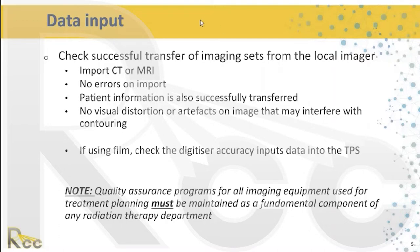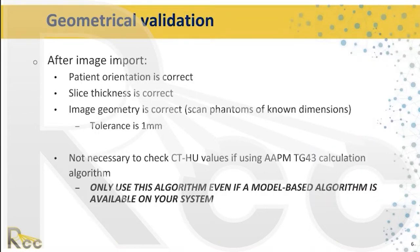QA programs for all imaging equipment feeding information into the planning system must be maintained with routine quality assurance. For geometrical validation, once data is imported into the treatment planning system, we must verify that the patient orientation is correct, slice thickness is correct, and that the image geometry accurately reproduces phantom dimensions within the planning system. The tolerance for this is typically around a millimeter.